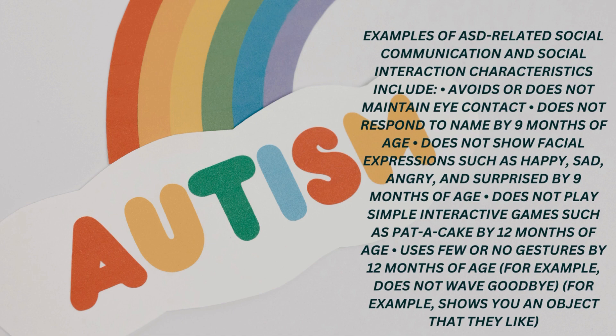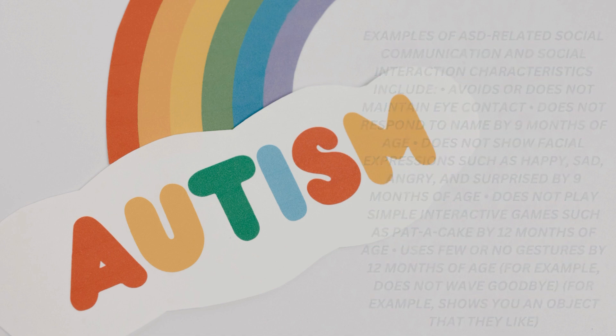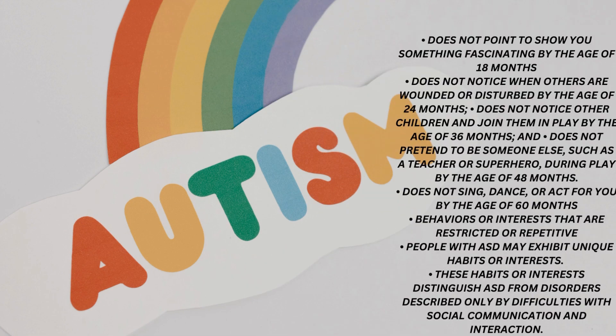For example, does not wave goodbye or show you an object that they like. Does not point to show you something fascinating by the age of 18 months. Does not notice when others are wounded or disturbed by the age of 24 months. Does not notice other children and join them in play by the age of 36 months. Does not pretend to be someone else, such as a teacher or superhero, during play by the age of 48 months. Does not sing, dance, or act for you by the age of 60 months.